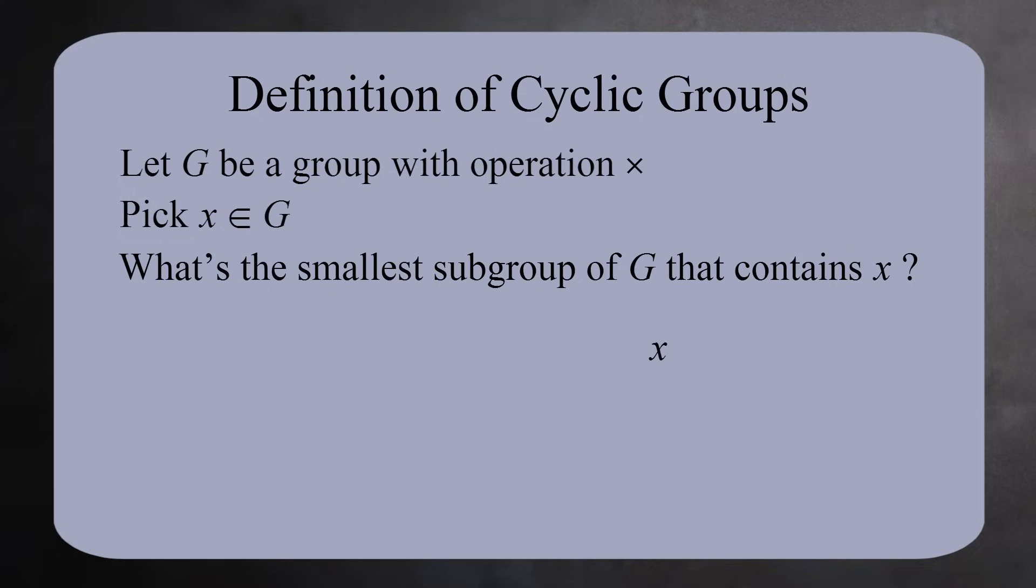First, any subgroup that contains X must also contain its inverse. It also has to contain the identity element. And to be closed under the group operation, it has to contain all powers of X and all powers of the inverse of X.